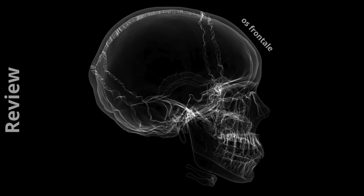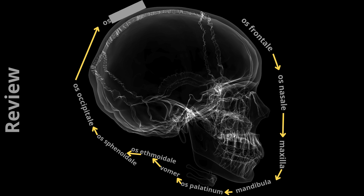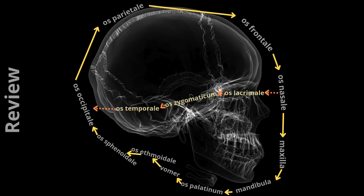Let's start with os frontale, then go down to os nasale, then maxilla, mandibula, then posteriorly to os palatinum, next vomer and os ethmoidale, os sphenoidale, os occipitale. The second circle: start with os nasale, then go laterally to os lacrimale, os zygomaticum, os temporale, then os occipitale from the back of the head, and again temporale, zygomaticum, lacrimale, and back to os nasale — and so on and so forth. Now you'll remember the skull bones forever.